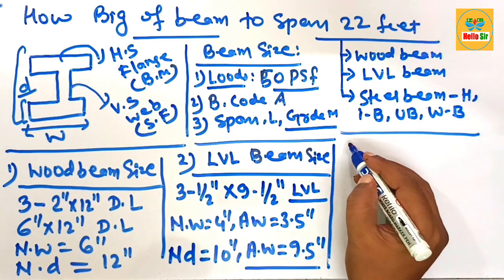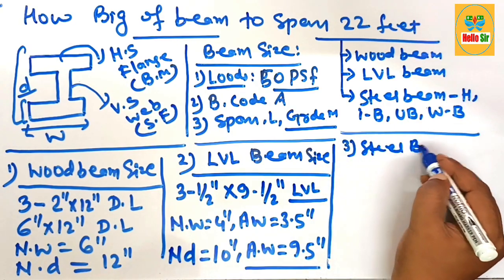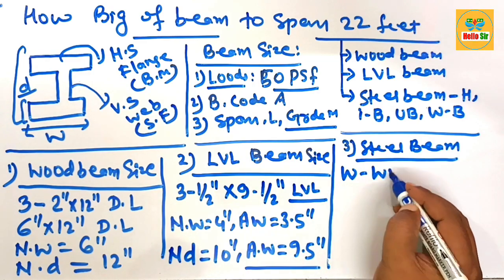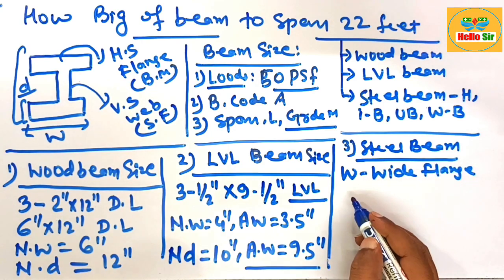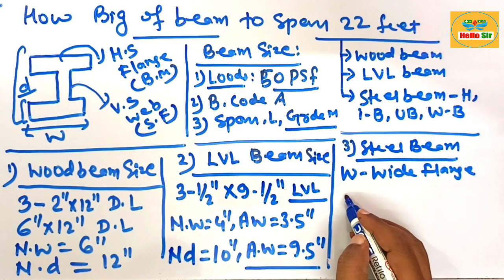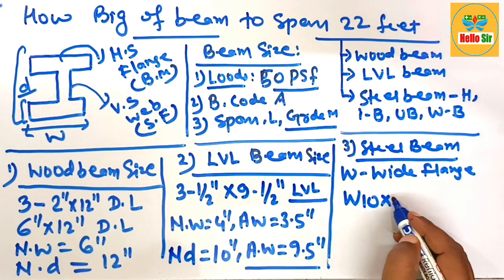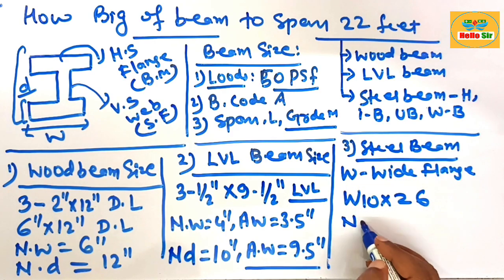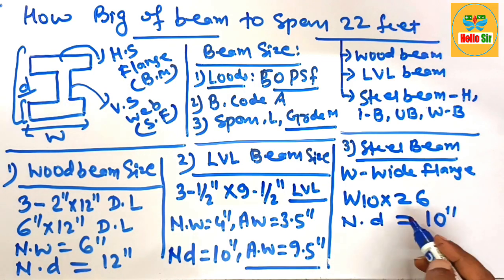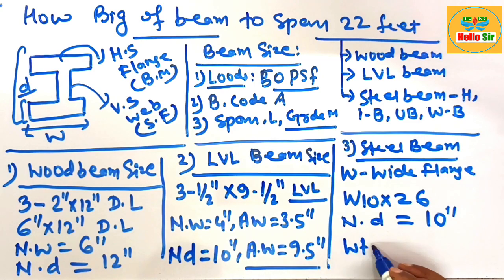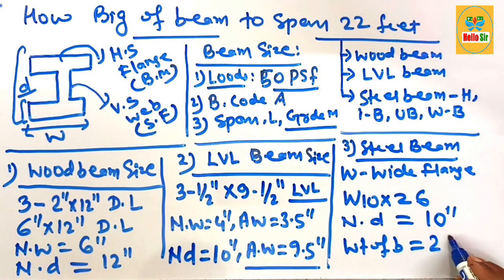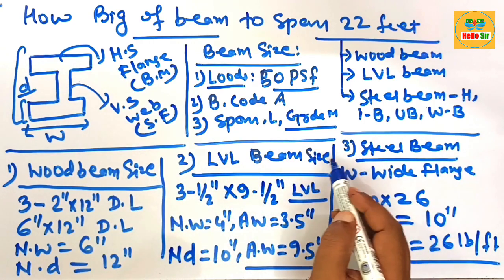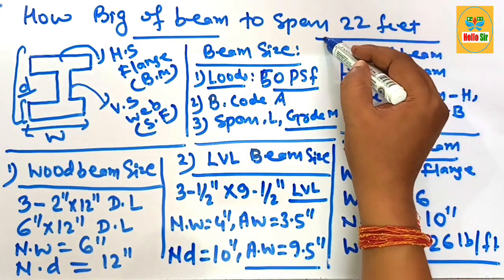For the steel beam size required to span 22 feet — also known as the W-beam or wide flange beam — the American wide flange beam required is W10×26. Here, W indicates wide flange beam, 10 indicates the nominal depth of the beam at about 10 inches, and 26 is the weight of the beam in pounds per foot — that is, 26 pounds per foot. These are the three beam sizes required to span 22 feet.